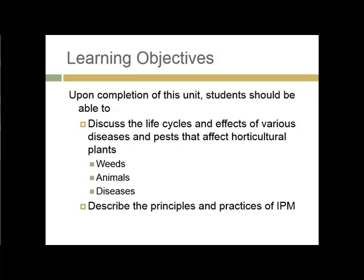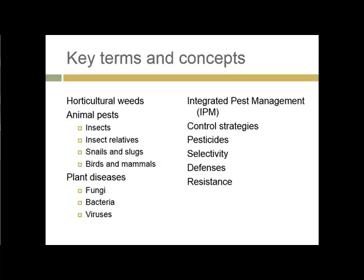Here are some of the key terms and concepts. We're going to be looking at animal pests, plant diseases, and horticultural weeds as the main categories of organisms that need to be controlled in order to produce healthy and productive plants.